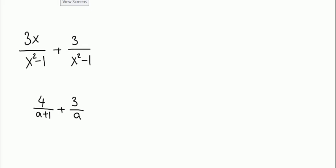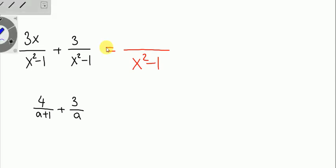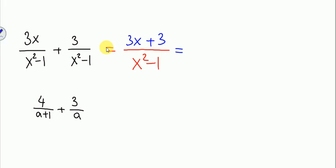The second example: as you can see, these two algebraic fractions have the same denominator. So I just add them up, writing over the same denominator x squared minus 1. The first numerator is 3x and the second numerator is 3. I add them up and group these two terms to simplify: 3 times the group, where the group is x plus 1.